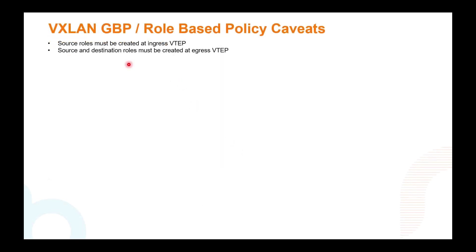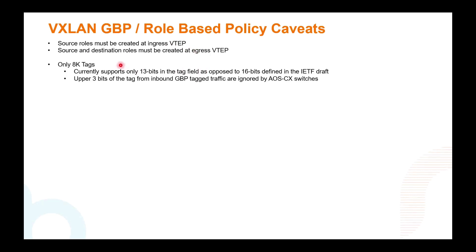A key caveat: source and destination roles must be created at the egress VTEP — that's where your policy is enforced, and you need source and destination for your ACL. It's best to have the same roles at both ingress and egress across all VTEPs. Note that only 8K tags are supported in CX — only the 13 bits are used as opposed to the 16 bits defined in the IETF draft. The upper 3 bits on the tag are ignored by CX switches.